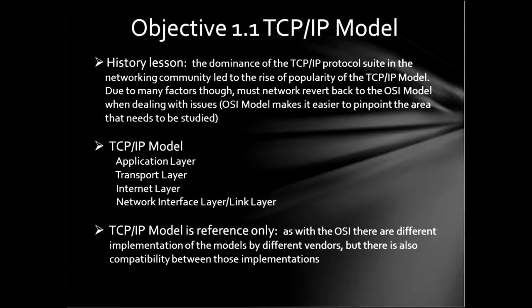Now we move to the TCP/IP model. Everybody uses TCP/IP nowadays — used to be there were a whole bunch of different networking standards, but nobody uses them really anymore except in very legacy operations. TCP/IP had to have its own model so that everything can communicate. It's a little bit easier to get your mind around — it's only broken into four layers: the application layer, the transport layer, the internet layer, and the network interface layer, also sometimes called the link layer. As with the OSI model, the TCP/IP model is reference only.